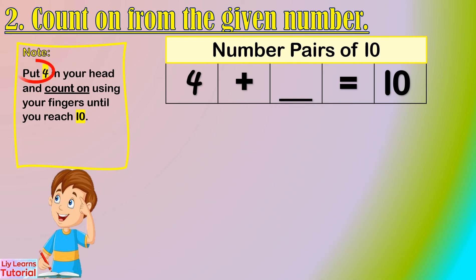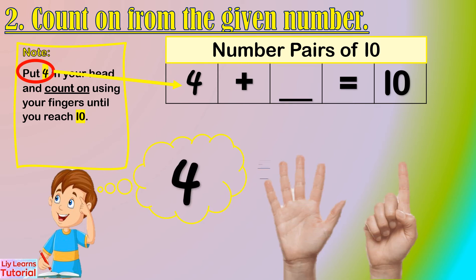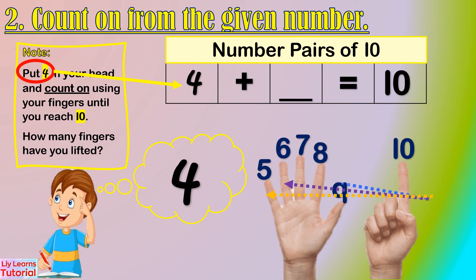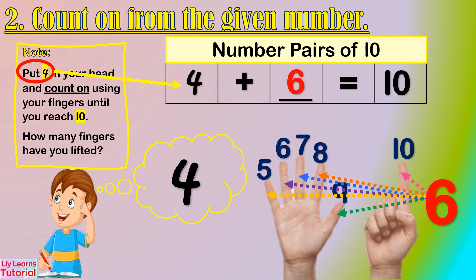Same step — let's start from 4. Hold 4 in your head, then count on: 4, 5, 6, 7, 8, 9, 10. How many fingers have you lifted? 1, 2, 3, 4, 5, 6 — that's 6 fingers. So the number pair of 4 is 6.